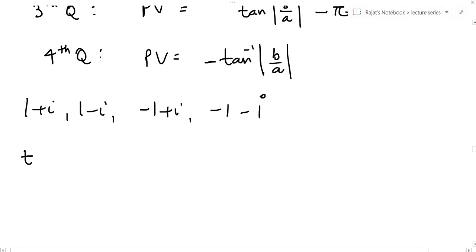In each of the above cases, tan inverse of mod b by a will be tan inverse either 1 upon 1 or minus 1 upon 1. The minus will be absorbed and each time you will get tan inverse 1 which equals π by 4.